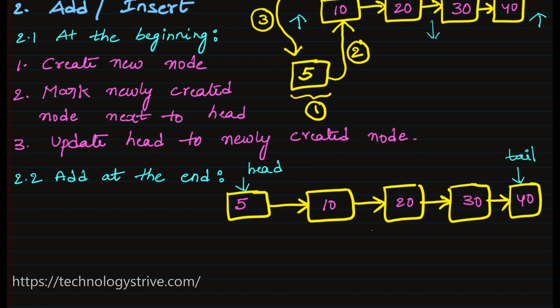To add at the end, node 40's next currently points to null, and there should be a new node we are going to create. Here, other than head, we are maintaining one more pointer which is tail. If we want to add at the end, we directly make use of this tail pointer and add at the end of the linked list.